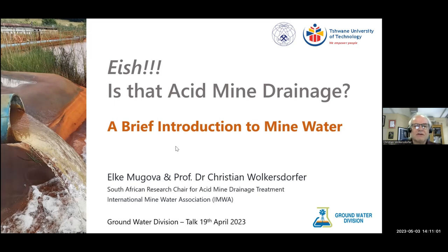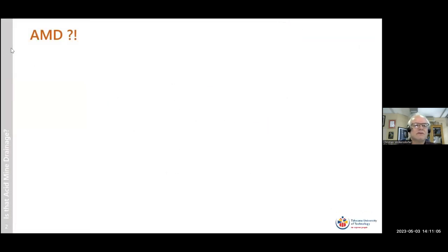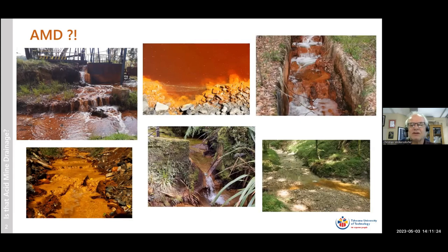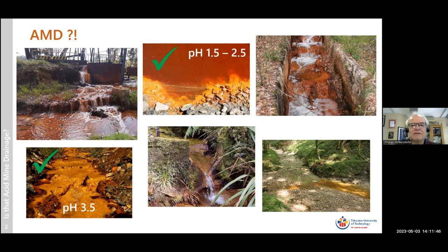The first slide gives you a little overview and poses a question: which of the next slides really shows acid mine drainage? You can see a selection where the water looks reddish or doesn't look reddish. The first one is acid mine drainage from Perm, Russia, with a pH of 3.5 — likely what you'd expect. The next one is in South Africa, coal mine water, with a pH between 1.5 and 2.5 depending on where you measure.